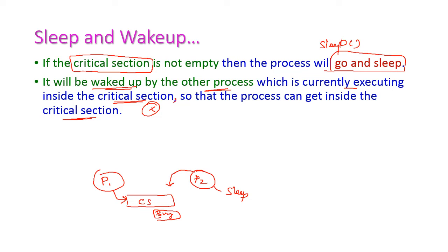Process two calls the sleep system call and goes to sleep mode. After process one completes execution of the critical section, process one calls the wake system call, and process two wakes up from sleep mode and enters into the critical section.